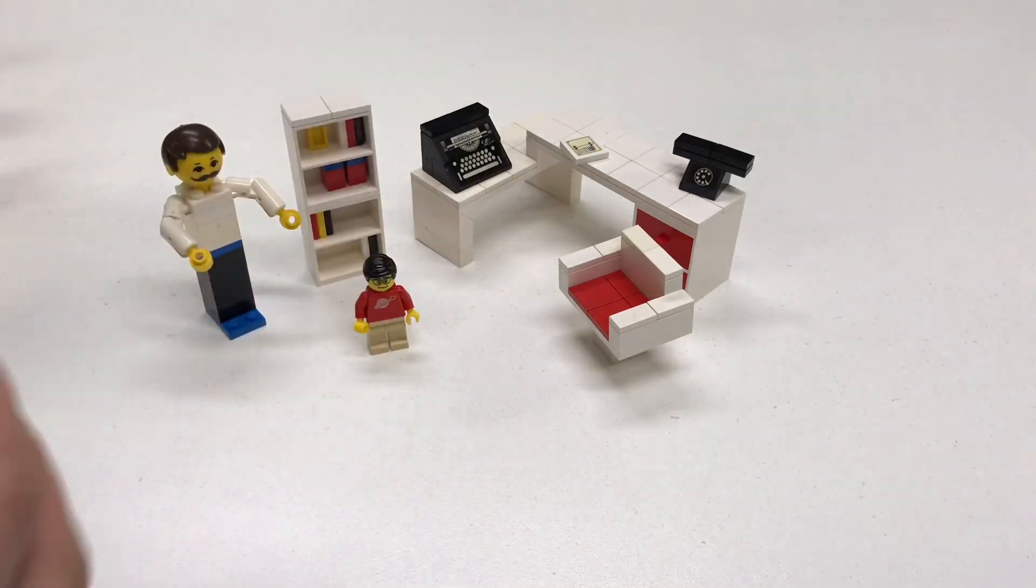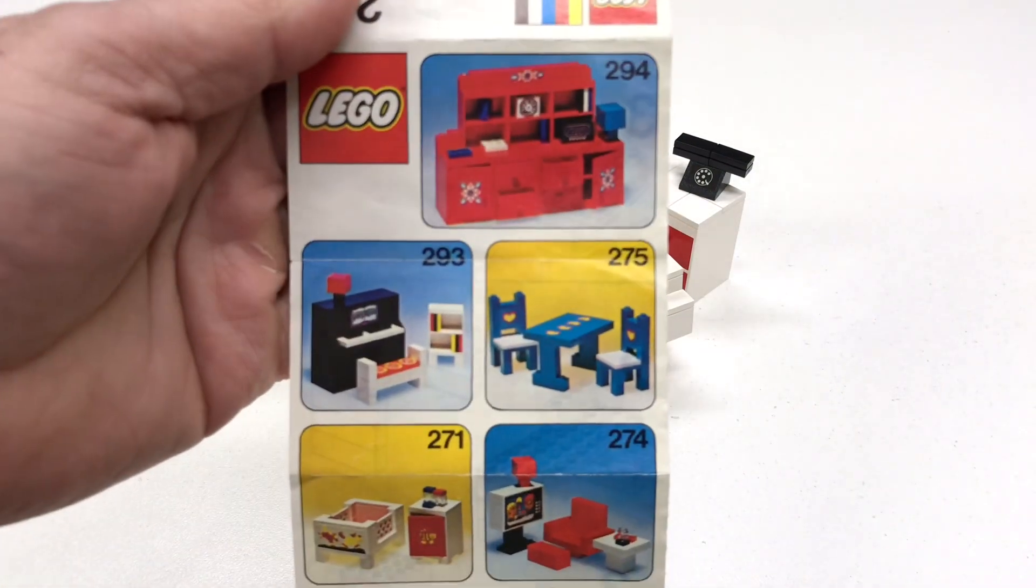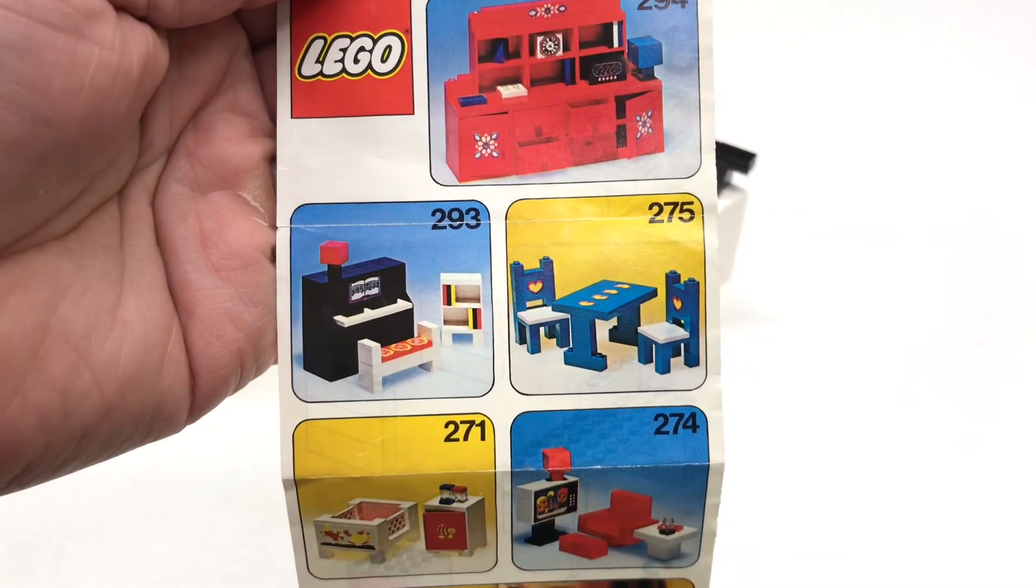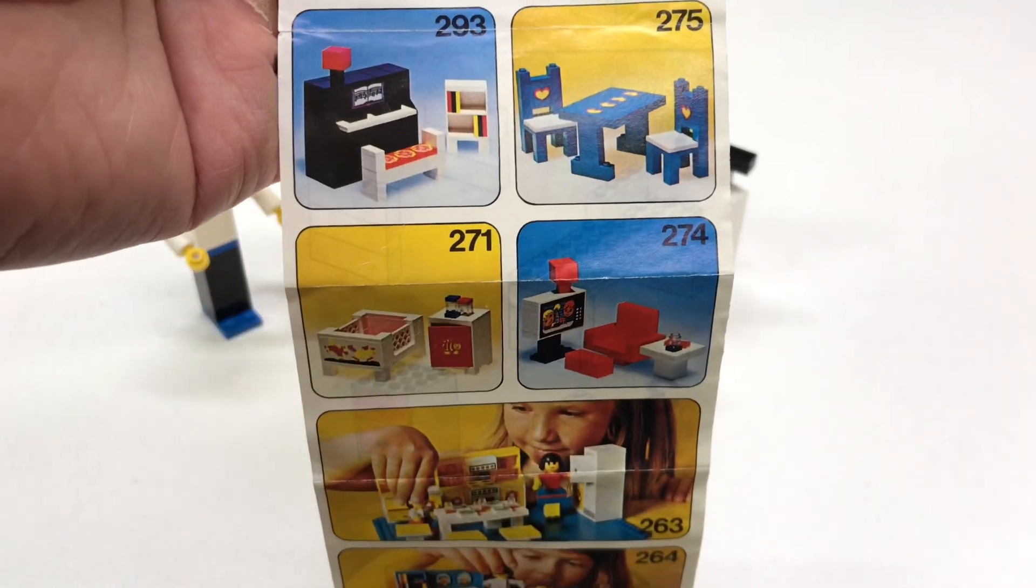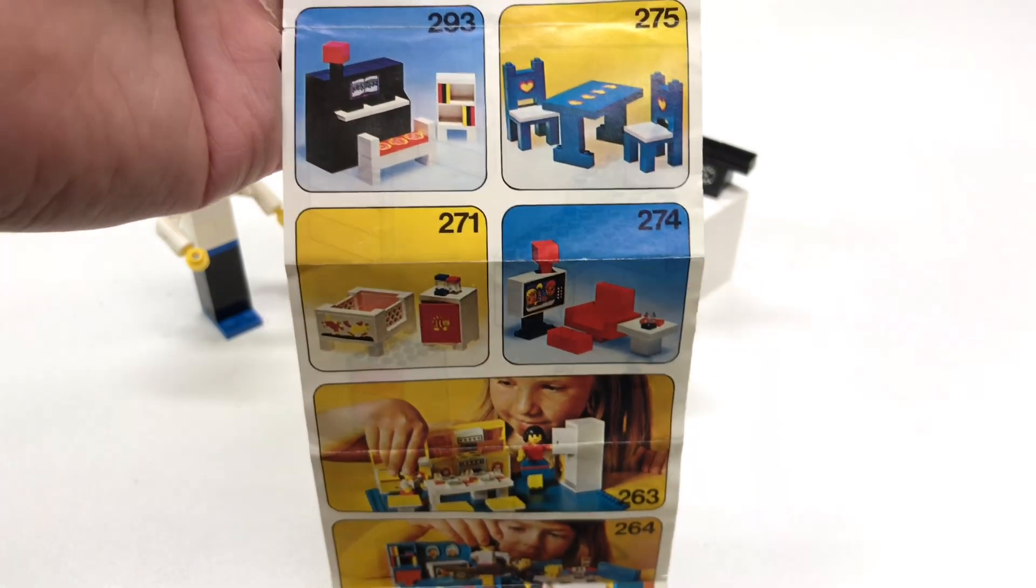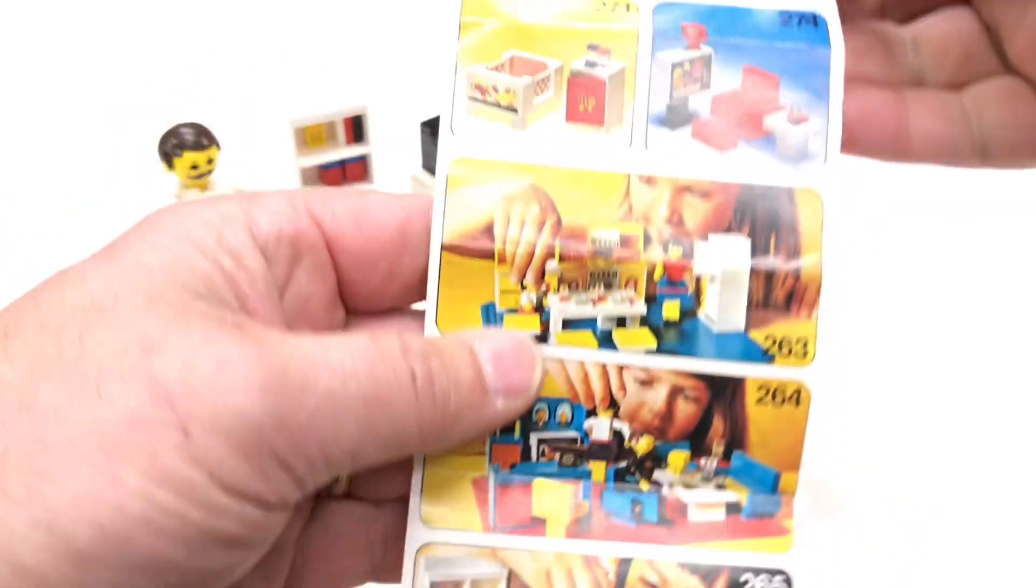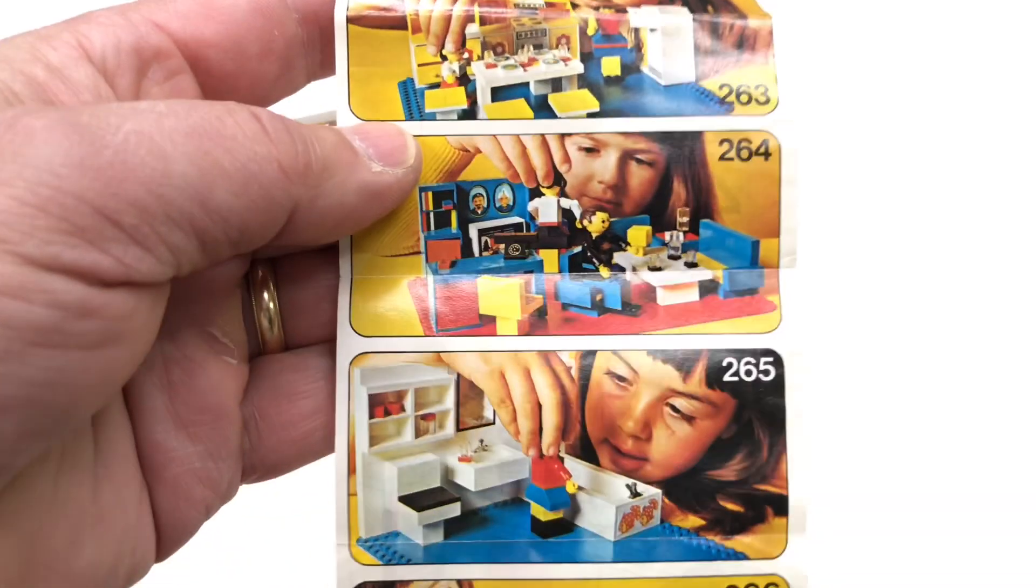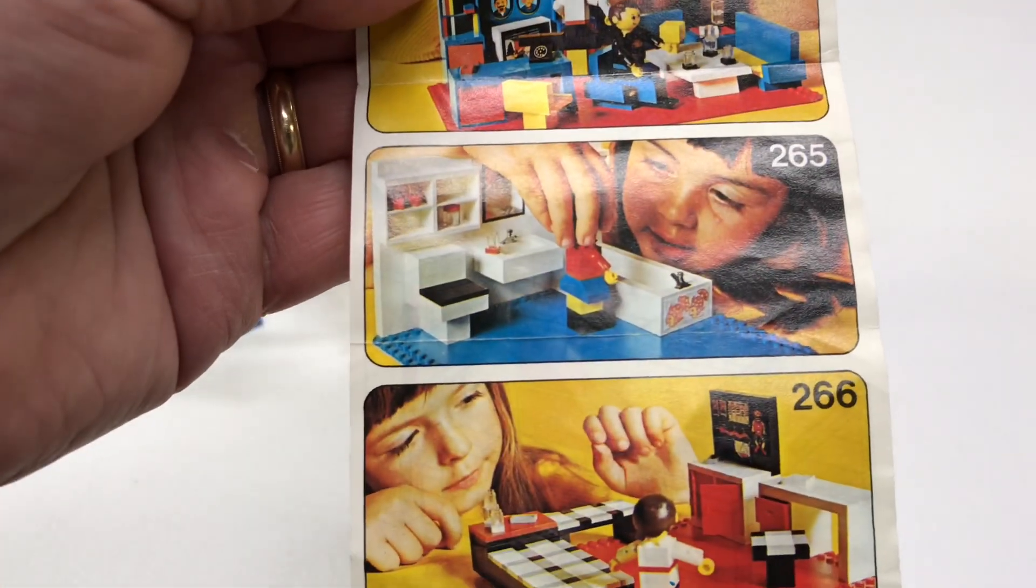But these sets were definitely marketed towards girls. I know because on the back of the instructions it shows some of the other sets. You got that bureau there. This one, the piano. I don't know if I got that one, but I definitely want that one. You got the blue table and chairs. You got this little nursery. We do have the TV, the color TV. Color TV in 1974, pretty amazing to have. We still had black and white TVs until the 80s in my family. And then here we got a kitchen, a living room, a bathroom with a toilet. It's got a toilet. And then the bedroom with a plaid.